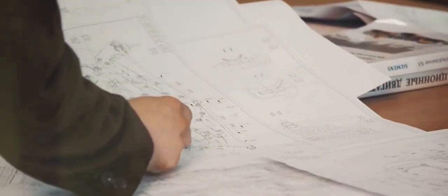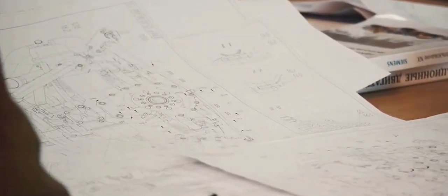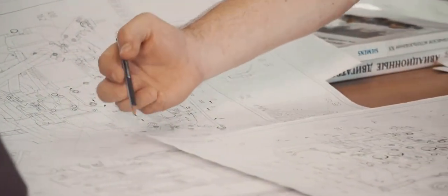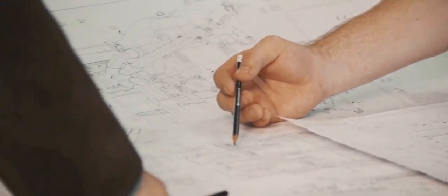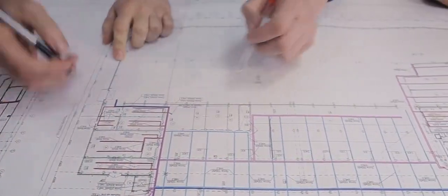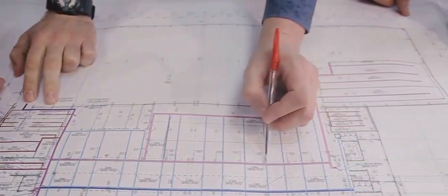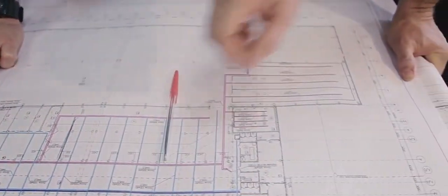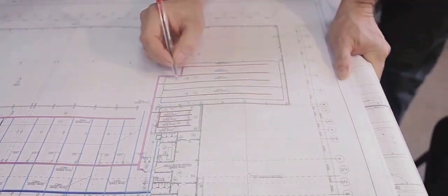Response surface designs fit a mathematical model to the relationship between factors and response, optimizing the results. Taguchi designs, on the other hand, reduce the number of runs required for a factorial or response surface design, making the process more efficient.